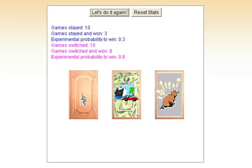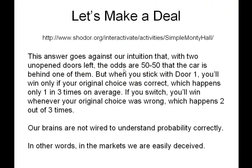This answer goes against our intuition that with 2 unopened doors left, the odds are just 50-50. But when you stick with door number 1, you'll win only if your original choice was correct, which happens only 1 in 3 times on average. If you switch, you'll win whenever your original choice was wrong, which happens 2 out of 3 times. Our brains are not wired to understand this probability correctly — in other words, in the markets we're easily deceived. The big takeaway is that usually our original choice is wrong.